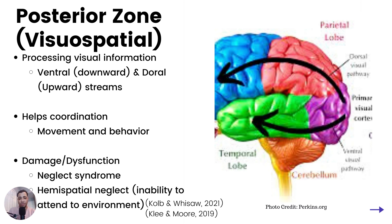The other area is the posterior zone, which is the visuospatial zone — this is where processing of visual information takes place. There are two streams that come out of the occipital lobe: the ventral stream, which is more downward, and the dorsal, which is upward. The ventral is more vision for perception and the dorsal is vision for action. In other words, it helps to coordinate movement, eye-hand coordination, and movement and behavior in the environment.